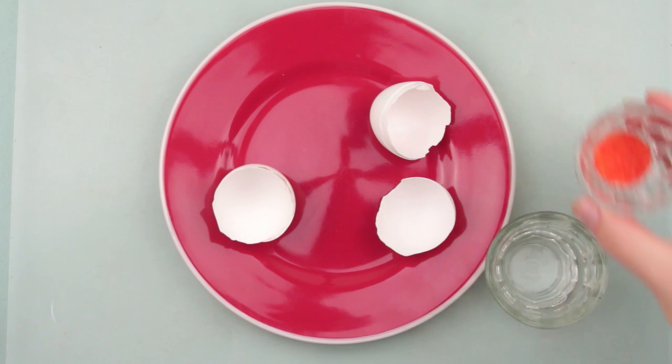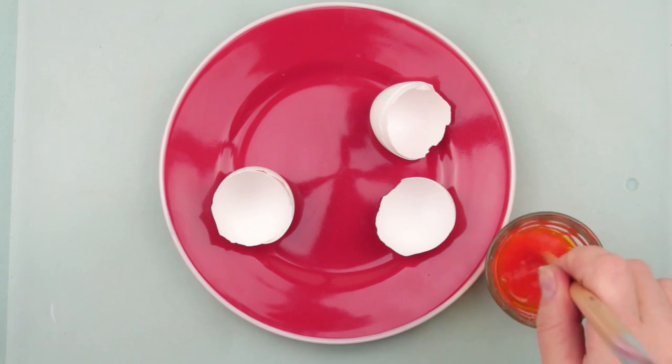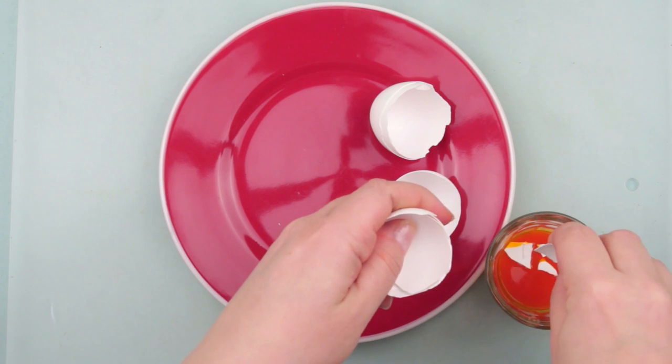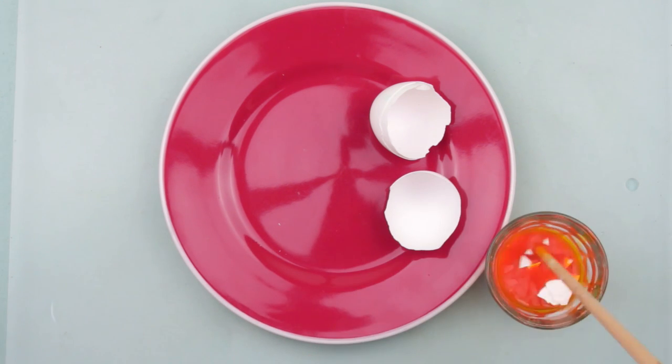Prepare the egg paint first. Follow the instructions on the package. Crack the eggshells and put them into the paint. Let them dry well.